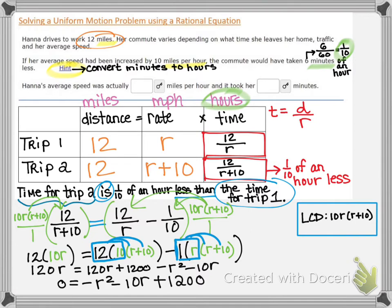Then of course, we want to look for a GCF. We should notice the GCF is negative one. So that leaves us with the trinomial R squared plus 10 R minus 1200.